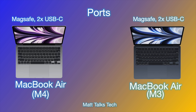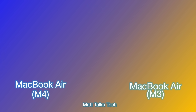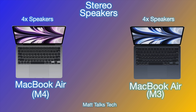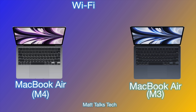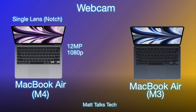For ports, both generations have MagSafe plus two USB-C ports. Note that Thunderbolt 5 is only available on the M4 Pro and M4 Max chips — the standard M4 still has Thunderbolt 4, the same speeds as the M3. Both also include a headphone jack. Speakers are also the same: four speakers on both the M4 and M3 MacBook Air. Wi-Fi is the same too — both support Wi-Fi 6E.